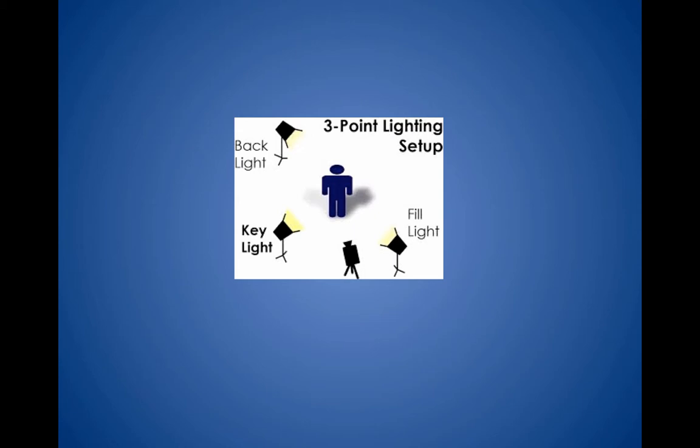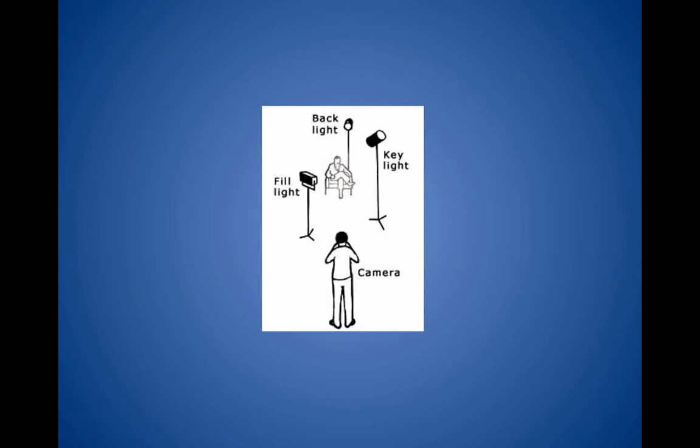Key light tends to throw hard shadows. Fill light, because it's softer and more widespread, softens those shadows. What you usually want when lighting is some kind of setup that gives you contrast to provide depth to your face or object. The backlight will typically be a smaller intensity than the key light, and the fill light will be in between.